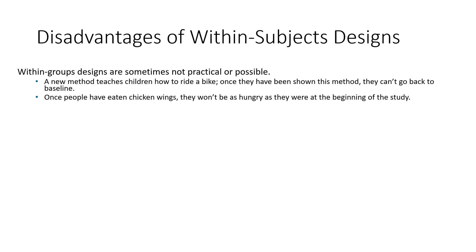Participants are essentially serving as their own control — any unsystematic variability due to different groups is eliminated because the same participants are in all conditions, and this reduces variance, which increases the chances of detecting a treatment effect. So if you can do a within groups design and have a logical reason for doing so, it is a better test overall. However, within groups designs are sometimes not practical or possible. For example, a new method that teaches children how to ride a bike — once you've taught a child to ride, they know how. You can't then test them on the old method because practice effects are so strong.